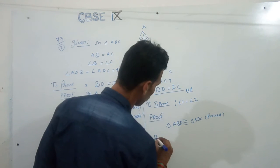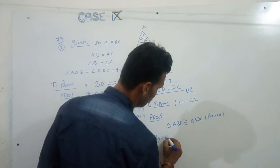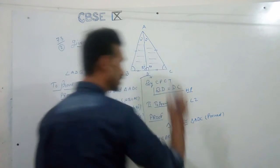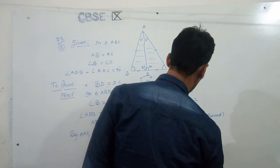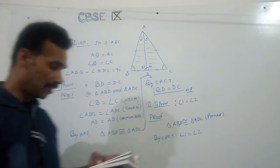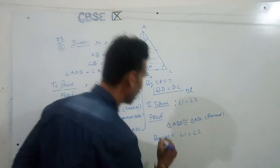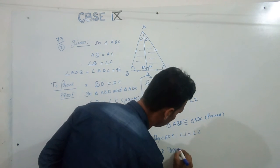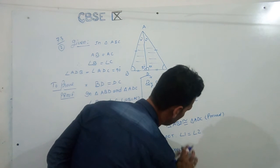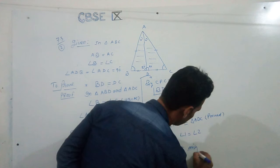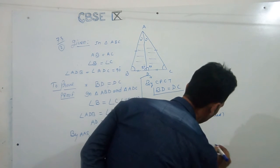Then by CPCT. CPCT. What will be? This angle equal to this. Angle 1 equal to angle 2. Then now we can say that AD bisects angle A. AD bisects angle A. Angle A. Okay? Hence proved. Okay?